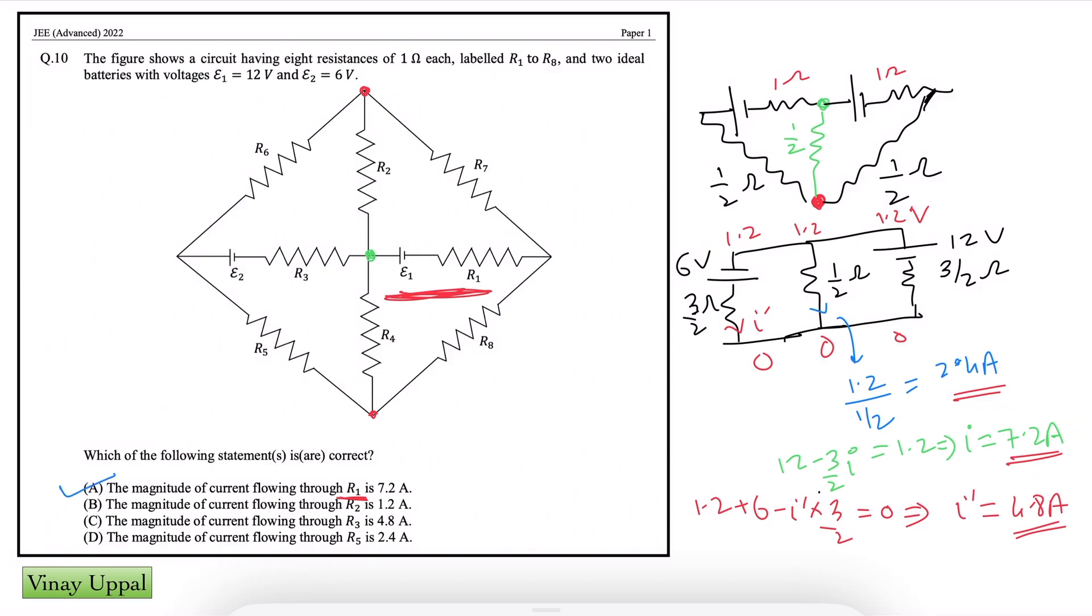Current flowing in R2 is 1.2A. Now, where is R2? R2 is the middle branch. So our middle branch, that is the parallel combination of R2 and R4. Therefore, we get the middle branch that is 2.4A. Half of it will go in R2 and half of it will go in R4. So how much is the current in R2? 1.2A. So option B is also correct.